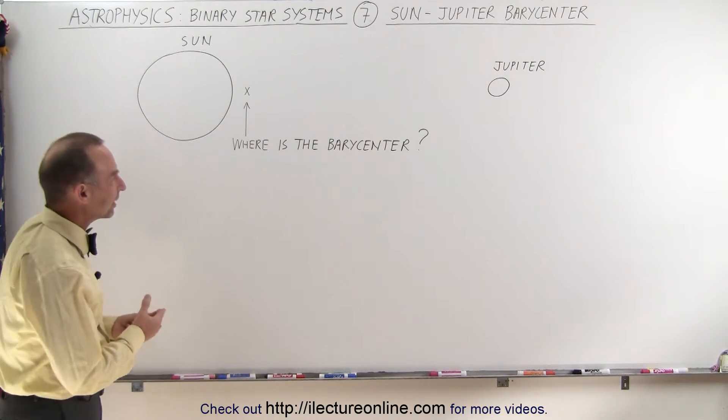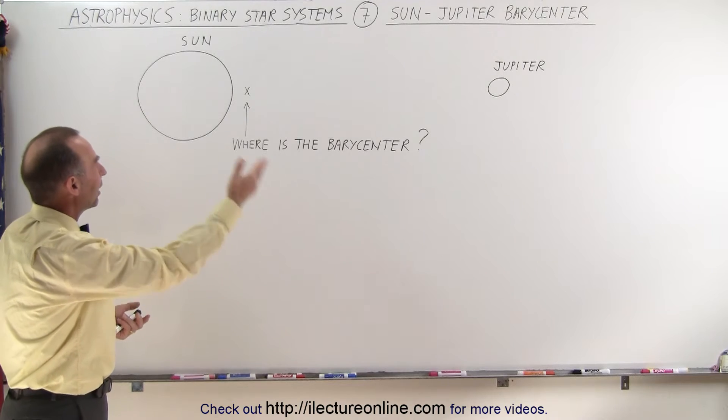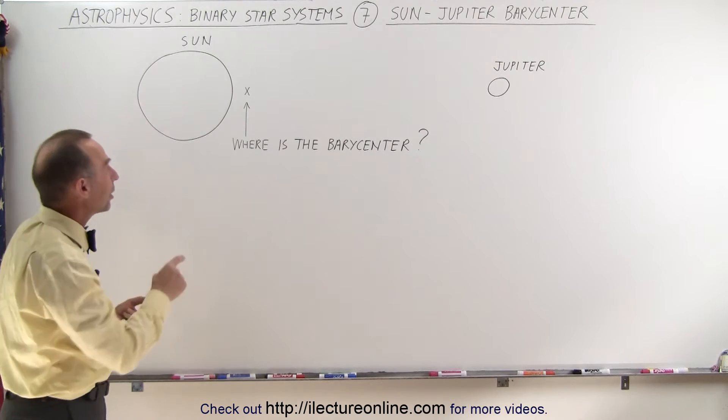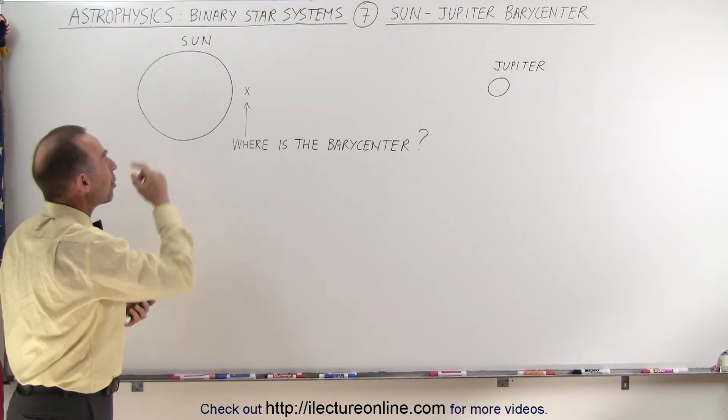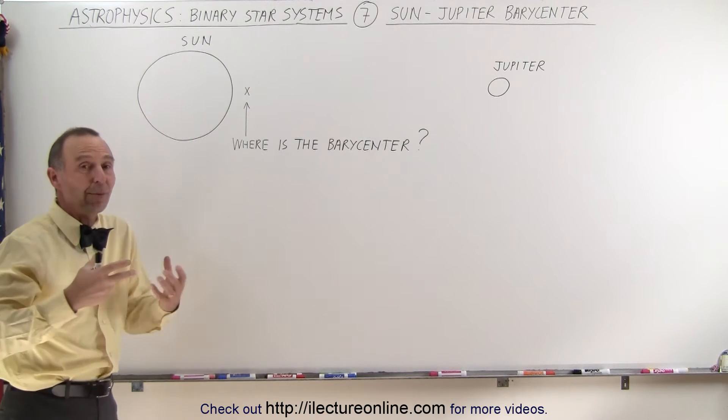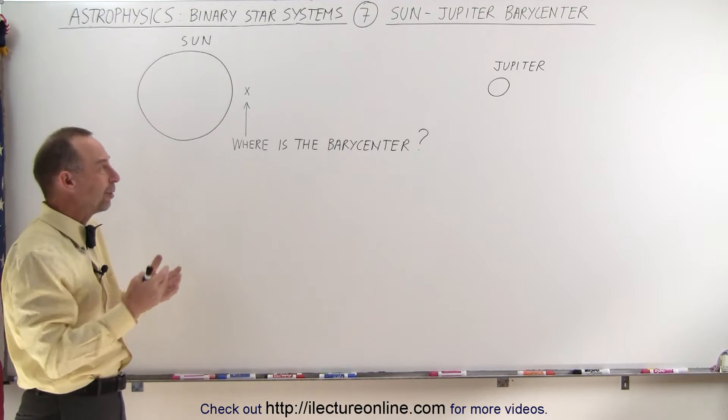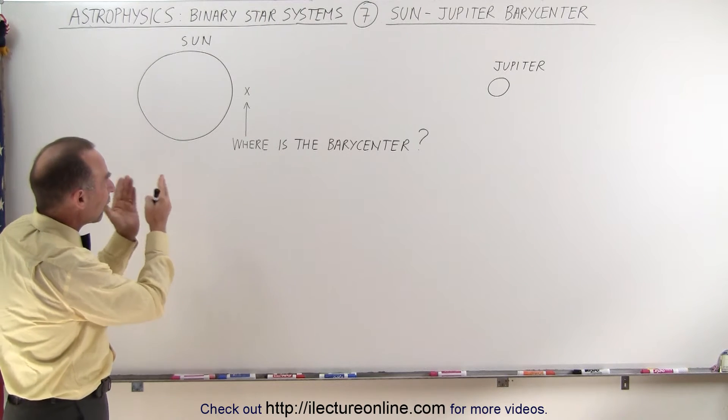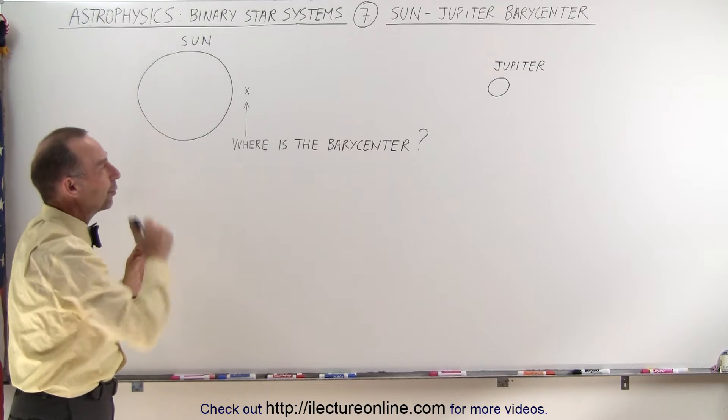As an example, let's calculate the barycenter between Jupiter and the Sun to see if it's significantly far enough away that we could potentially notice the motion around the barycenter if we were an alien, far away from our solar system, looking at what our star was doing as Jupiter went around the Sun.